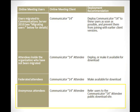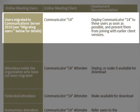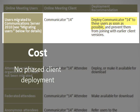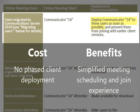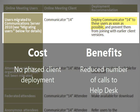And the last group is anonymous users who attend these meetings. Now let's look at deployment best practices for Communicator 14 users. Deploy Communicator 14 to meeting organizers as soon as they have been migrated. The cost of this step is that in order to support conferencing during beta, you cannot do a phased client deployment. The benefits are significant though: simplified meeting scheduling and join experience for organizers, access to all online meeting features, and reduced helpdesk calls for administrators.